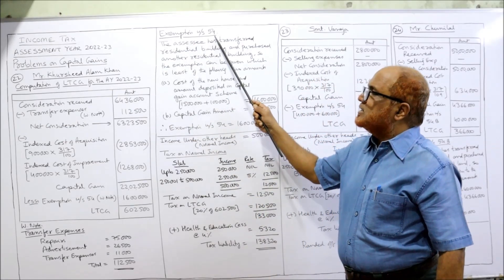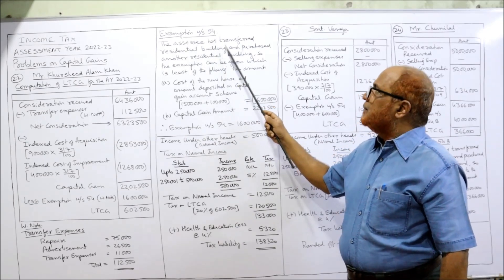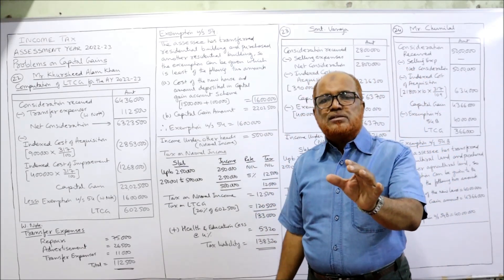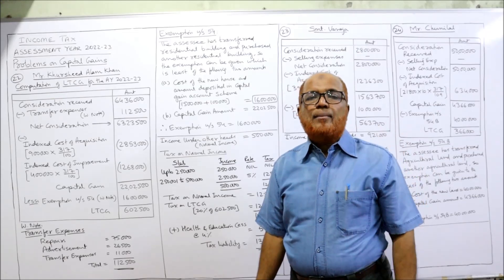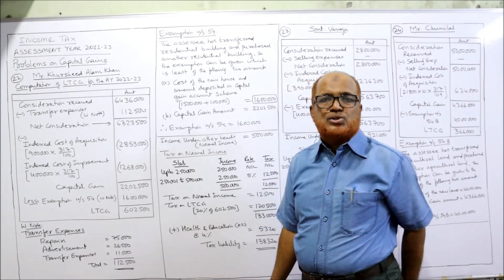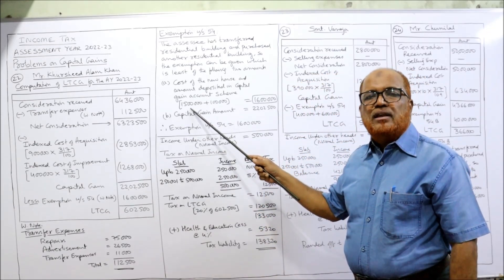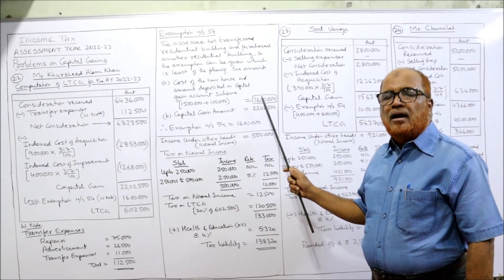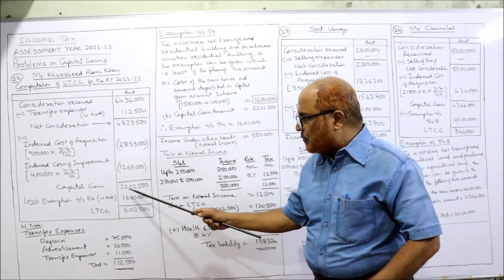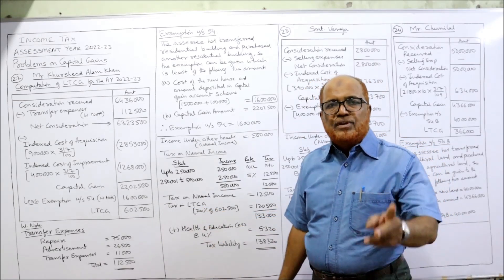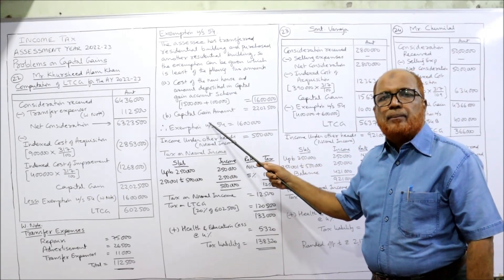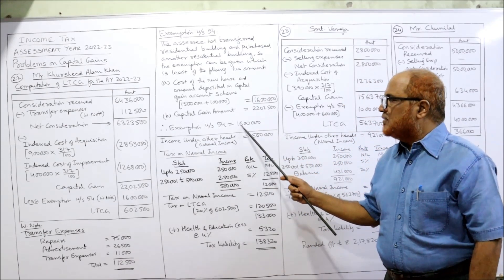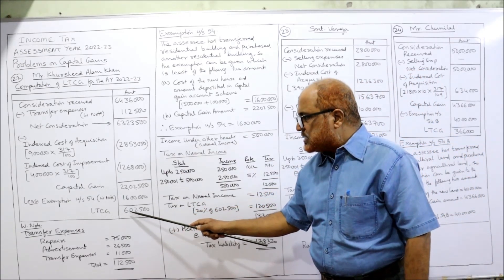In the working note, write: Exemption under Section 54 — the assessee transferred a residential building and purchased another residential building. Exemption is the least of: (1) cost of new house + amount deposited in capital gain account scheme = Rs. 15 lakh + Rs. 1 lakh = Rs. 16 lakh, and (2) capital gain = Rs. 22,25,000. The lower is Rs. 16 lakh. Therefore, exemption under Section 54 is Rs. 16 lakh and long-term capital gain taxable is Rs. 6,25,000.